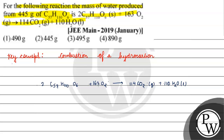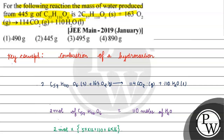From the reaction, we have 2 moles of C57H110O6 giving 110 moles of water. To get the mass of water, we need to calculate the molecular mass. The molecular mass of C57H110O6 will be: 57×12 plus 110×1 plus 16×6 per mole.